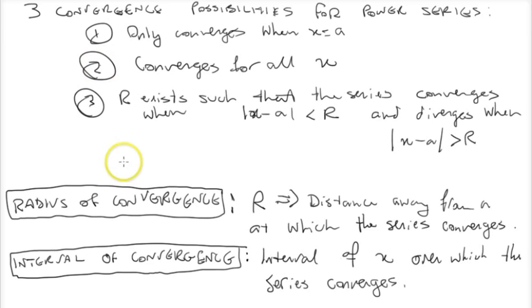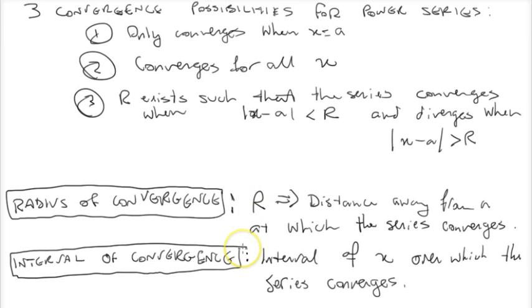The interval of convergence is the interval of x over which the series converges. In the third case, you can add the radius to a and then subtract it from a, and you'll get your interval of convergence. The best way to understand and illustrate these concepts is just to do some practice. So I've got a couple problems where we're going to find when a power series converges, and we're going to find its radius of convergence and its interval of convergence.